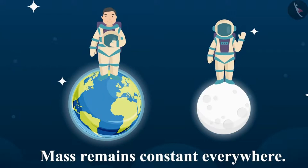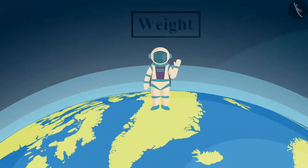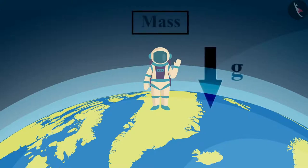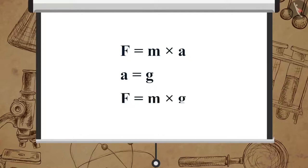We know from the previous video that the Earth attracts every object with a certain force. The weight of an object is this force with which it is attracted towards the Earth. This force is defined on the basis of the mass of the object and the acceleration due to gravity. As we have learned, force is equal to mass multiplied by acceleration, and here the acceleration is the acceleration due to gravity.